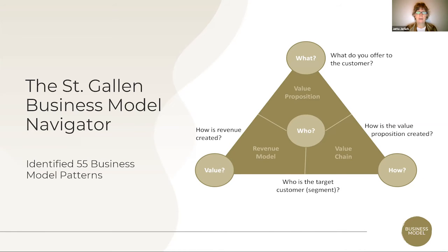This is the model that is behind those 55 business model patterns — the what, the who, the how, and the value — that allows you to think of patterns of how the exchange between you, your competition, your other stakeholders, and your channel partners work together to deliver that value to your customer.